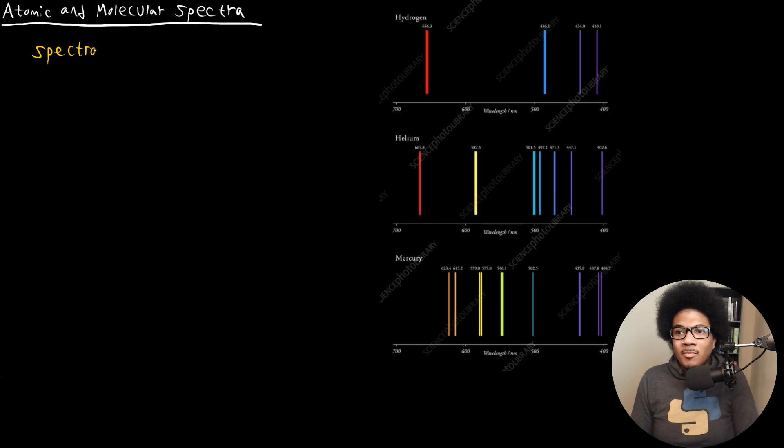So spectroscopy, like I mentioned in the first video, is just the study of the spectrum that's produced when light interacts with matter. We've looked at a few processes where light and matter interact—the photoelectric effect, Davison-Germer experiment—but with spectroscopy, you're looking at the spectrum that's produced when light interacts with matter.